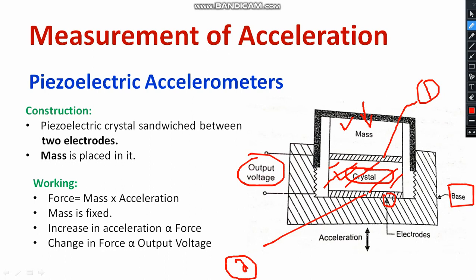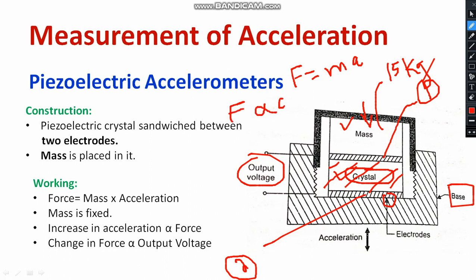You know the equation F is equal to M into A. From this expression, the mass is kept constant — maybe 15 kilogram or 20 kilogram, it will not change. From this relation, F is proportional to acceleration.